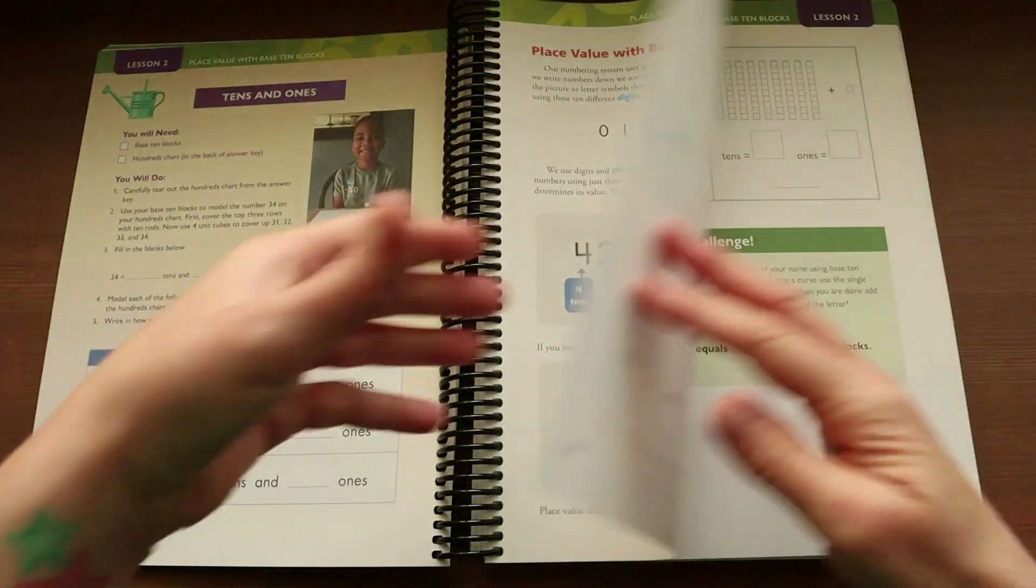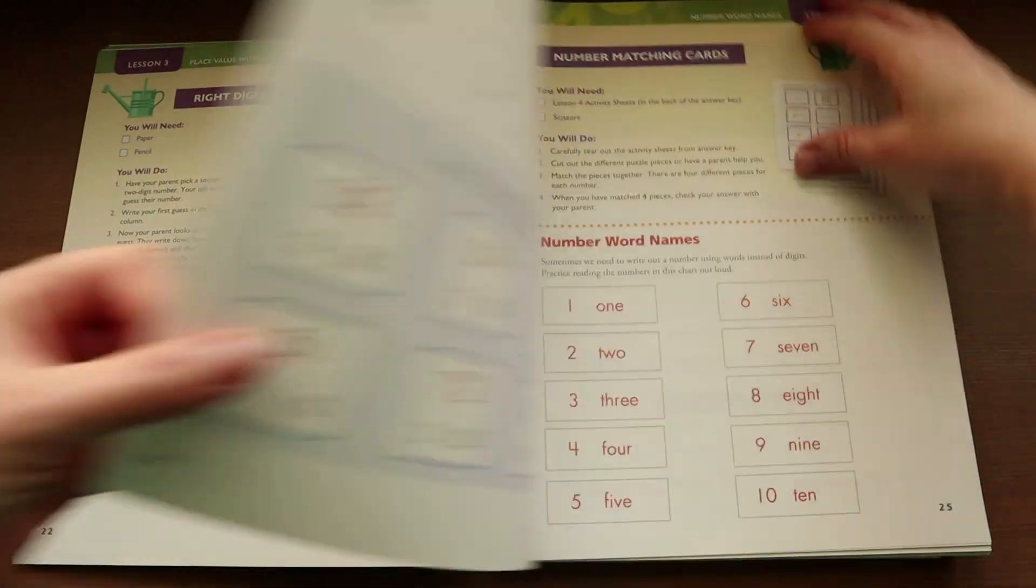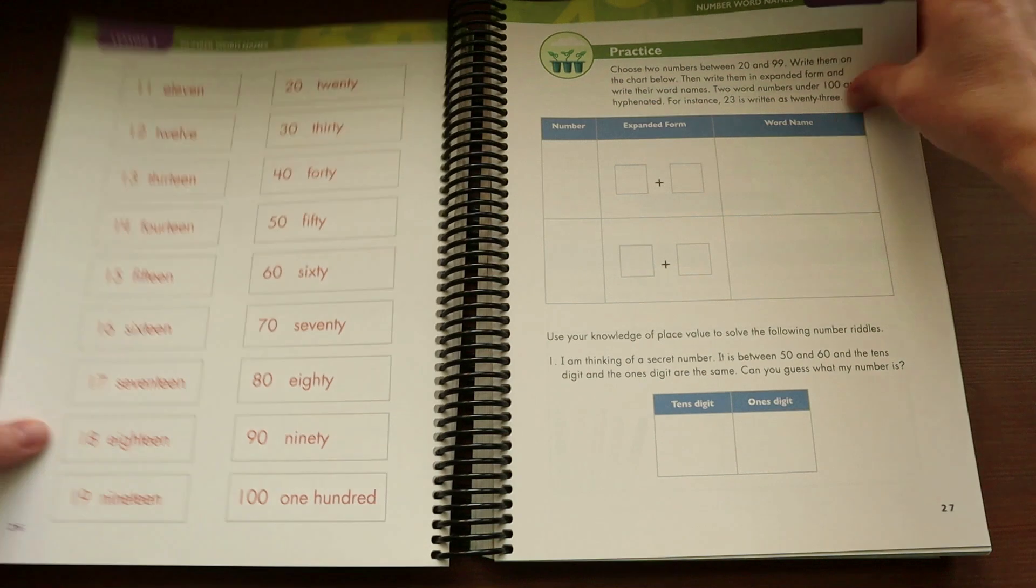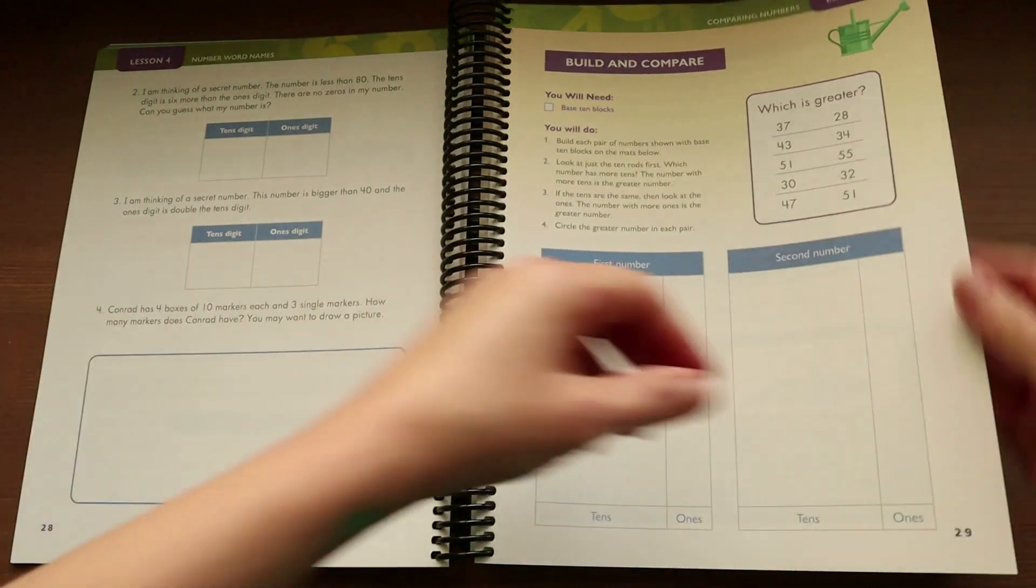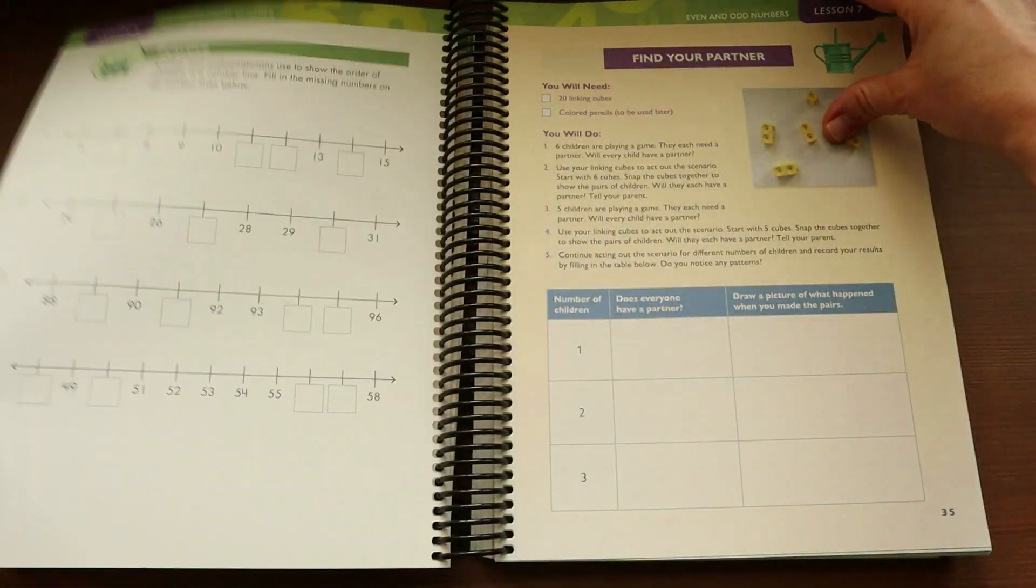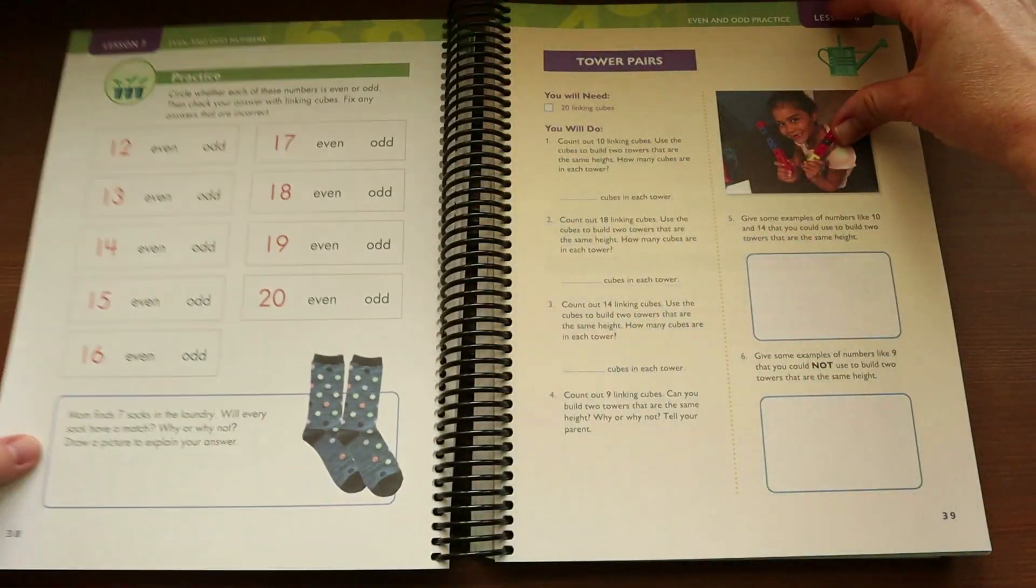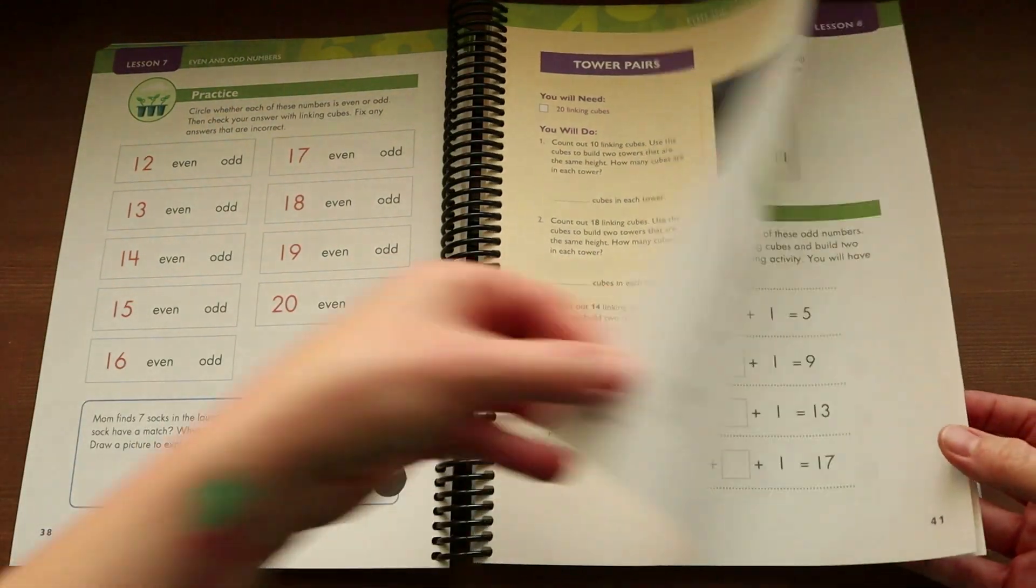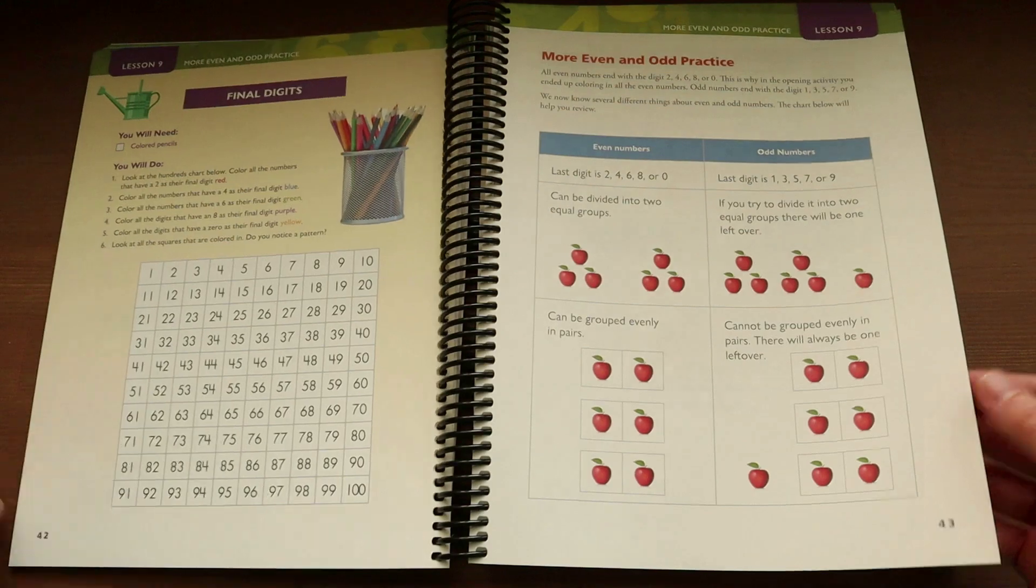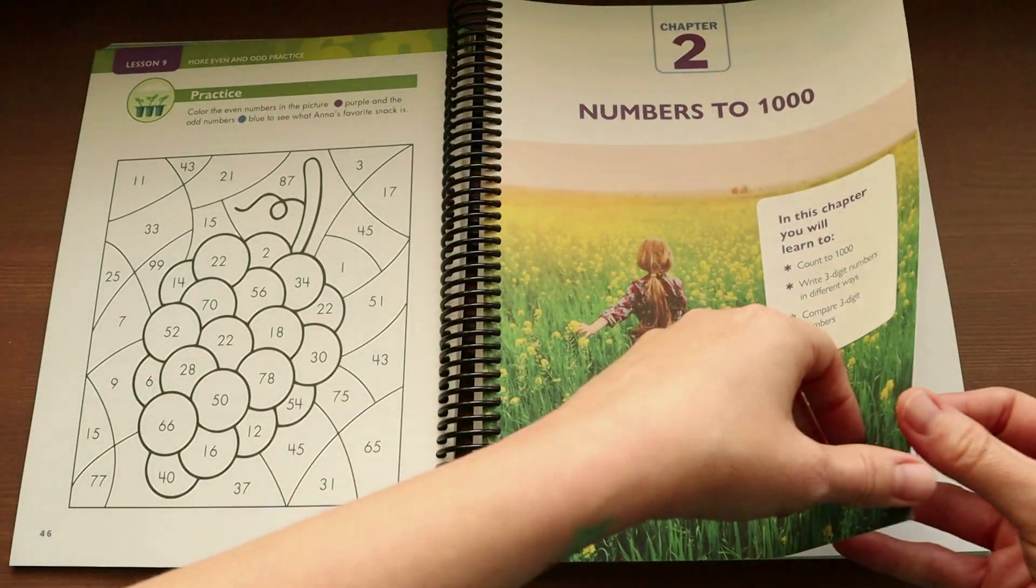At the time of filming this curriculum is $60.75 for both the parent teacher's guide and the student book. If you're only wanting the student book you can get that for $43.50 or the teacher's guide is $17.25. This is on their website. I will have it linked down below in the description bar in case you are interested in checking it out.